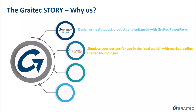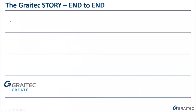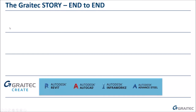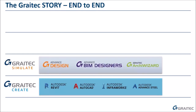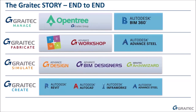Grey Tech can take your project from start to finish across four key areas: Create, using Autodesk products enhanced with Grey Tech power packs; Simulate, using tools like Advanced Design and Advanced Design Connection; Fabricate, taking finished models through to fabrication drawings using Advanced Steel, Advanced Workshop, and Armor Plus; and Manage, handling project data via Grey Tech Open Tree and BIM 360.